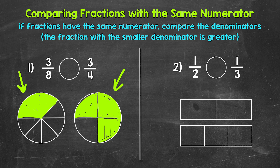So which fraction is greater? Which circle has more shaded in? We can see that 3 fourths is greater. But how does that work? Both of these circles have three parts shaded in, so how is one fraction greater than the other? It's because of the denominators. The circle on the left is split into eight parts, and the circle on the right is only split into four parts. When we have the same numerator, we can compare the fractions by looking at the denominators.